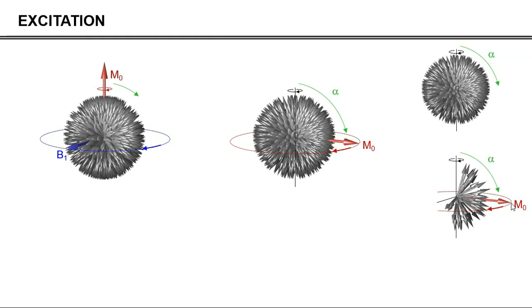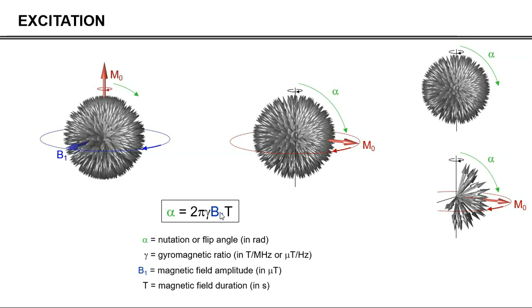Now this flip angle alpha is given by this equation, and you can see that you can adjust the rotation angle by either changing the amplitude of the secondary magnetic field, or its duration.